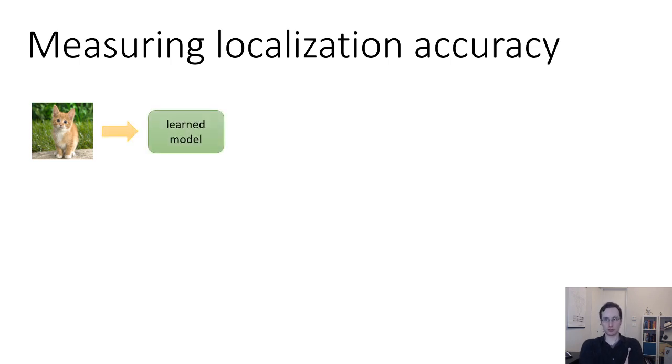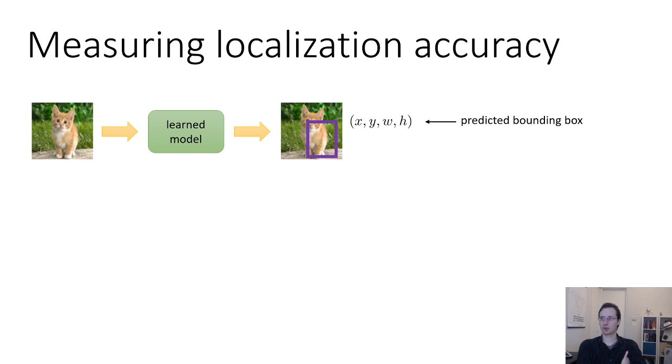So, at a high level, our localization model will be some learned model that will take in a picture and it will output a semantic category and the bounding box. So, maybe this model is not that good, it outputted this purple bounding box, and it got the class right, it said this is a cat. Okay, so it outputs five things: a class, an x, a y, a w, and an h. And typically the class is associated with a score, like a probability. And then we want to say, well, was this a correct localization or not?